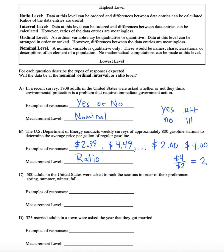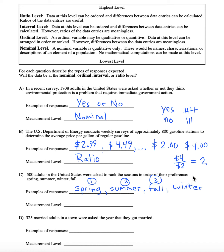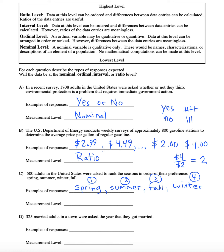500 adults in the US were asked to rank the seasons in order of their preference: spring, summer, winter, and fall. In order to give a response to this, you have to rank the seasons. For example, I prefer spring as my number one, then summer, then fall, then winter. In order to even answer the question, I had to rank them in order. Since the data can be put in some kind of order, this is the ordinal level.